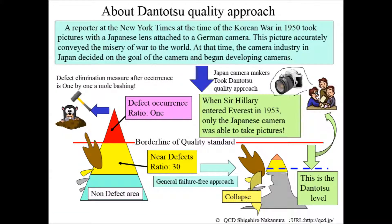Before I introduce examples of companies that caused social problems by taking bad quality strategies and neglecting customers, I will introduce the efforts of the best manufacturers who are leading Japanese makers. Please look at this figure. This shows an indication of the efforts of Japanese camera manufacturers aiming at the quality of 'dantotsu' — extremely high quality.